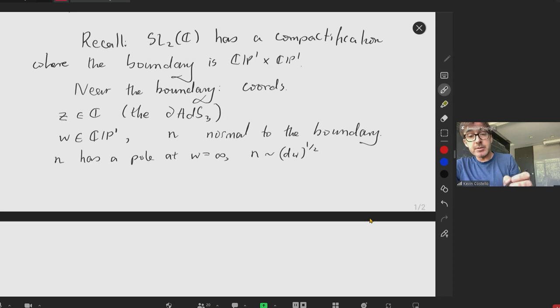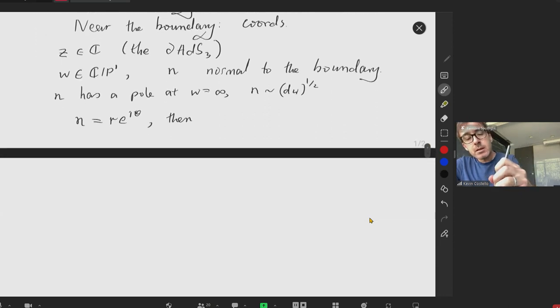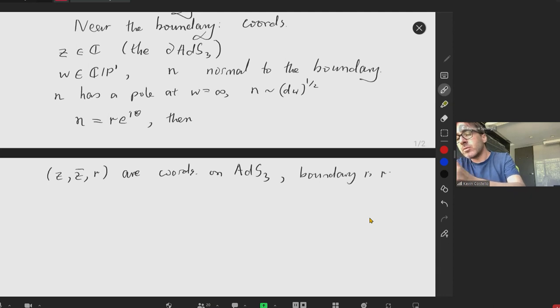So these coordinates we're going to use are related to the coordinates on AdS3 times S3 as follows. If we write N equals or e to the i theta, then Z, Z bar, are coordinates on AdS3. We're really utilizing AdS3, and the boundary is or equal to zero.